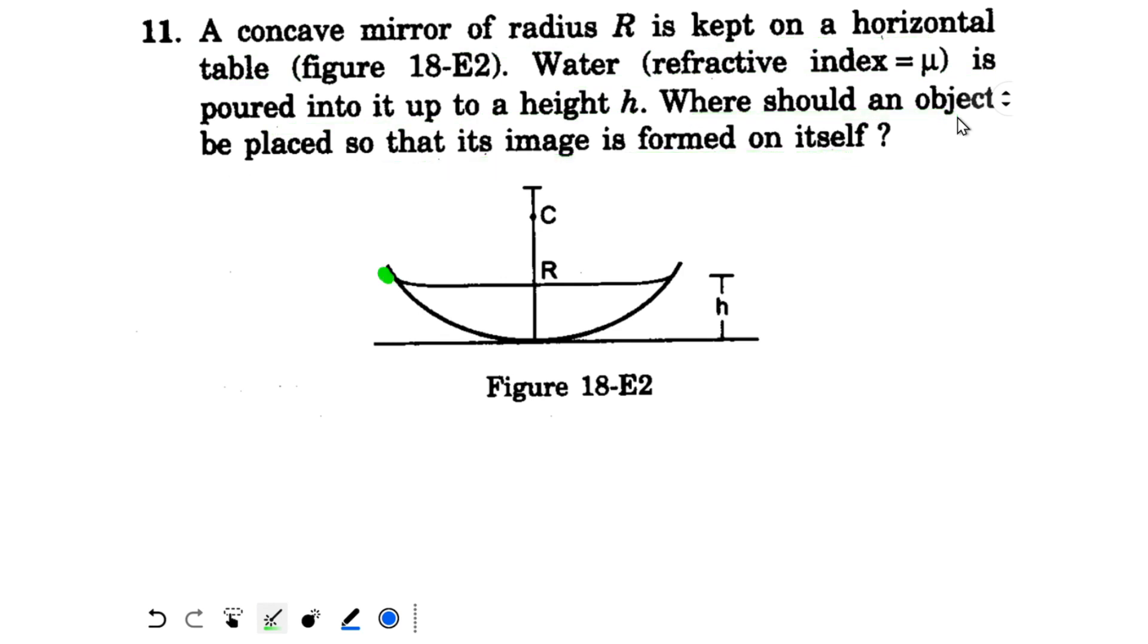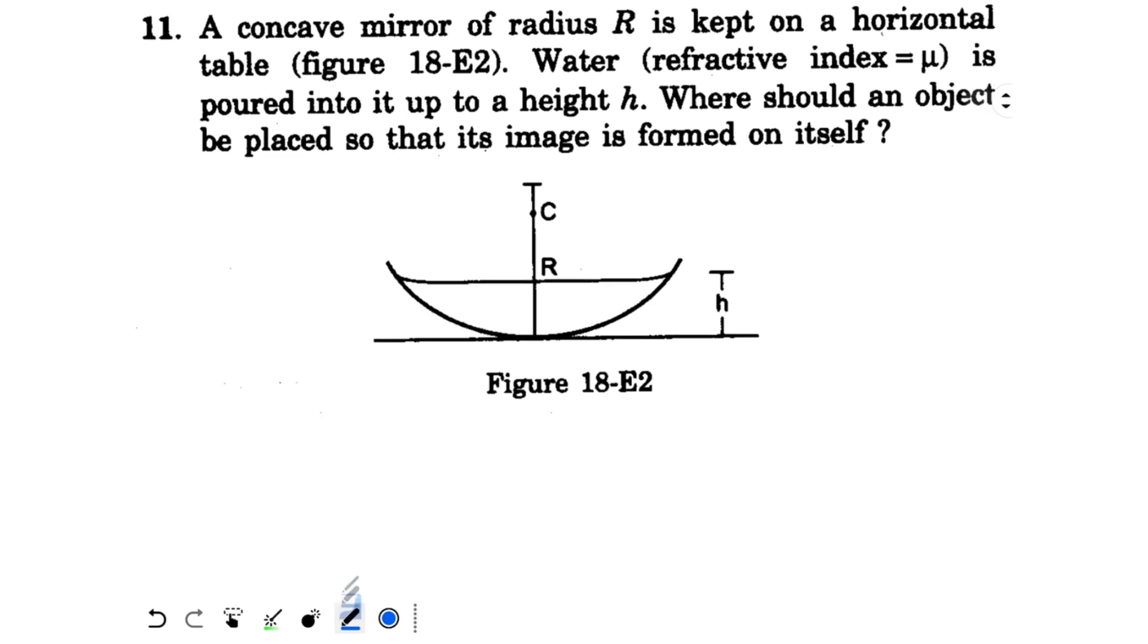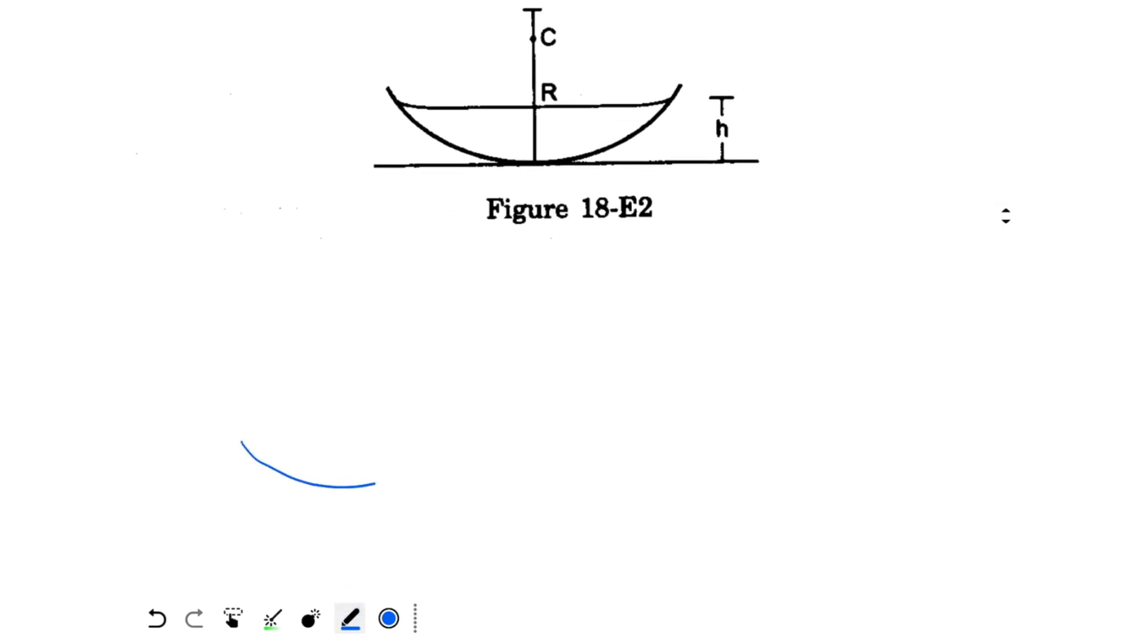First of all, this is your mirror. This is your water surface of height h, and here we have the object. We have to find the position of the object so that the image is formed at the object itself. Now first of all, let's look at the concave mirror.